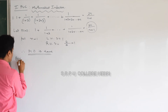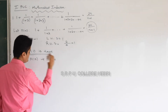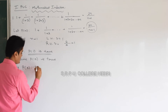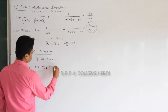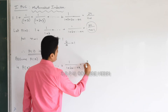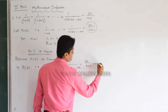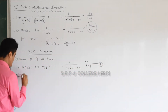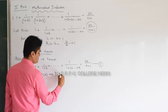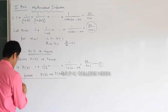What should we do next? Assume. Assume P of k is also true. I hope you know why we are doing this. That is, P of k: 1 plus 1 by (1 plus 2) plus so on up to 1 by (1 plus 2 plus ... plus k) equal to 2k by (k plus 1). This you are going to use to prove P of k plus 1 is also true. Using this assumption you are going to prove P of k plus 1 is also true.